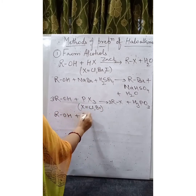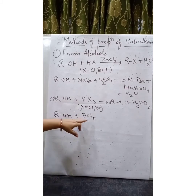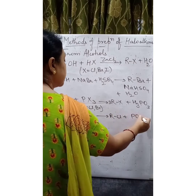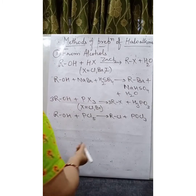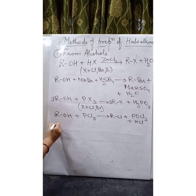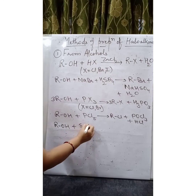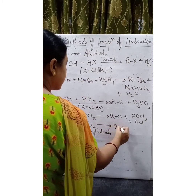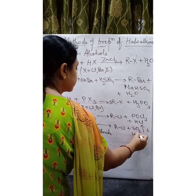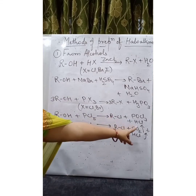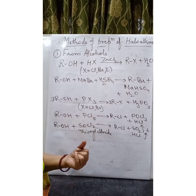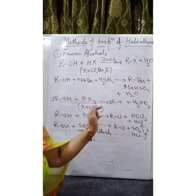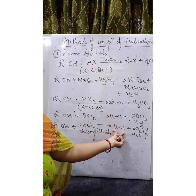ROH treated with PCl5 is used specifically for preparing chlorocompounds from alcohol: ROH plus PCl5 gives RCl plus POCl3 (phosphorus oxychloride) plus HCl. One more method for preparation of chlorocompounds uses ROH plus SOCl2, which stands for thionyl chloride. Thionyl chloride gives RCl plus SO2 gas plus HCl. Preparation of chlorocompounds using thionyl chloride from alcohol is considered the best method.